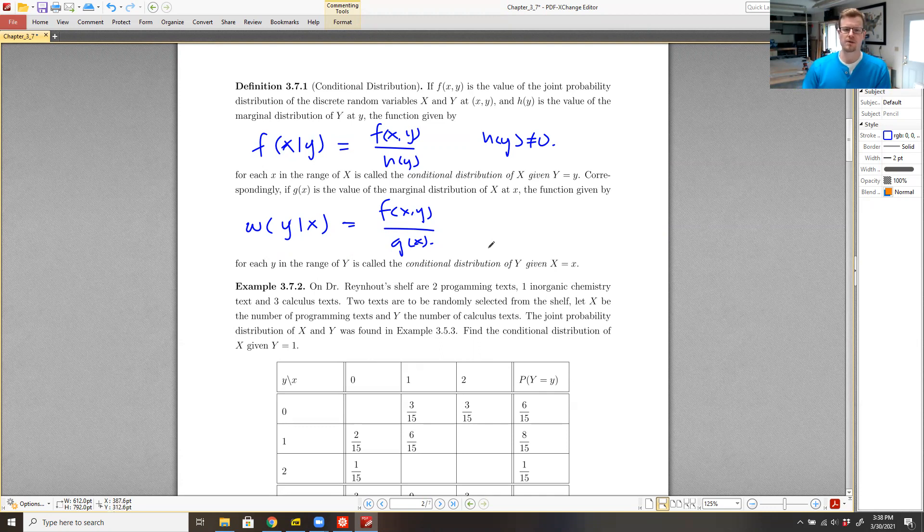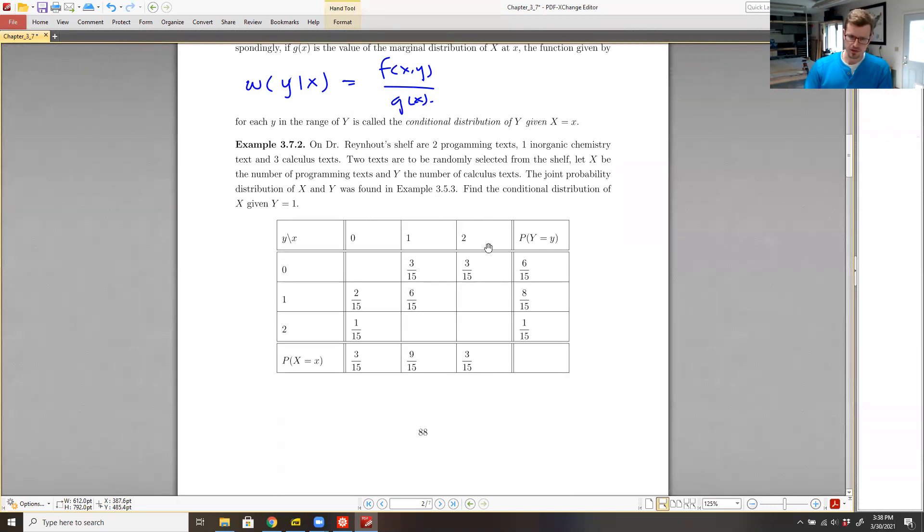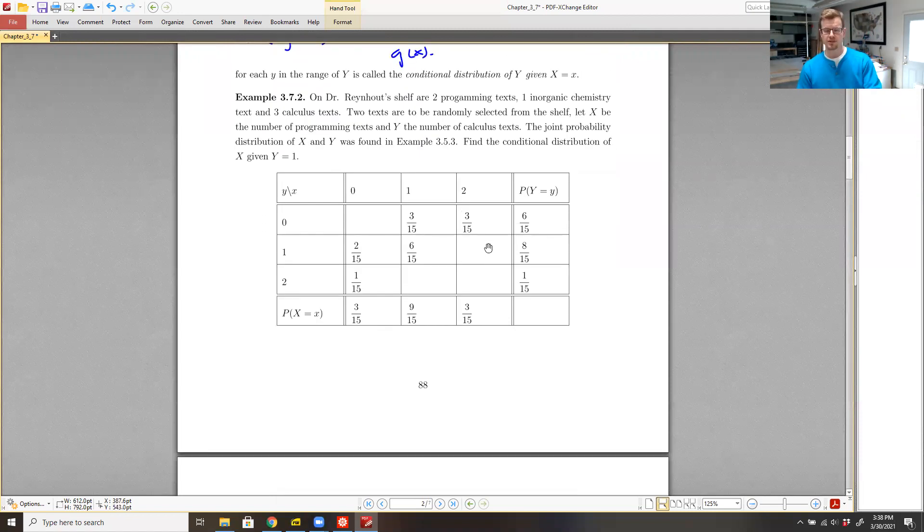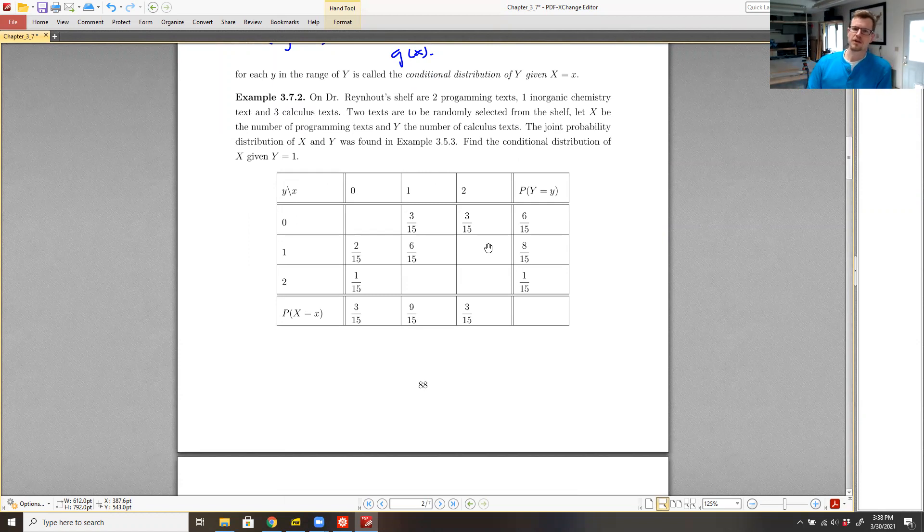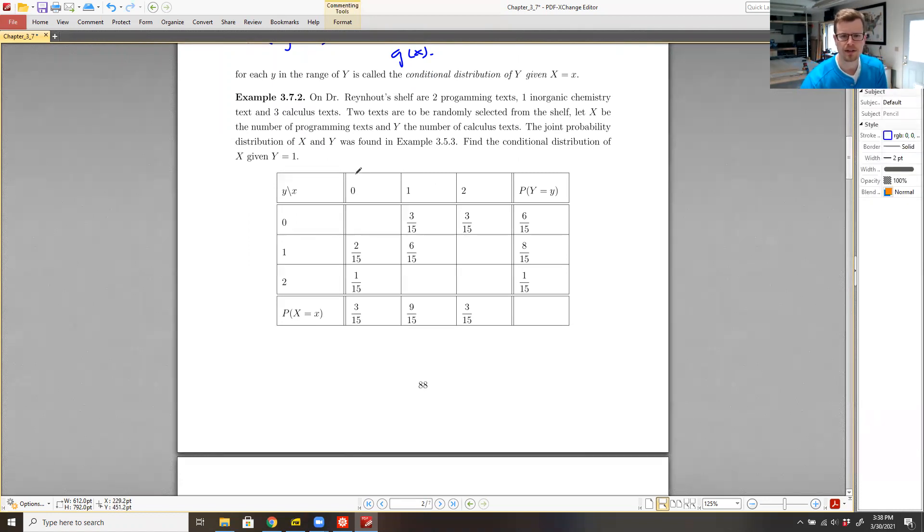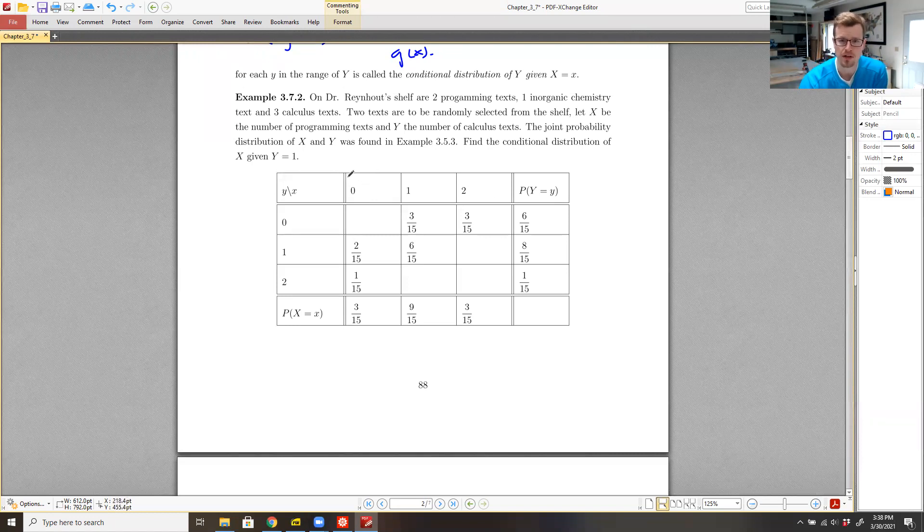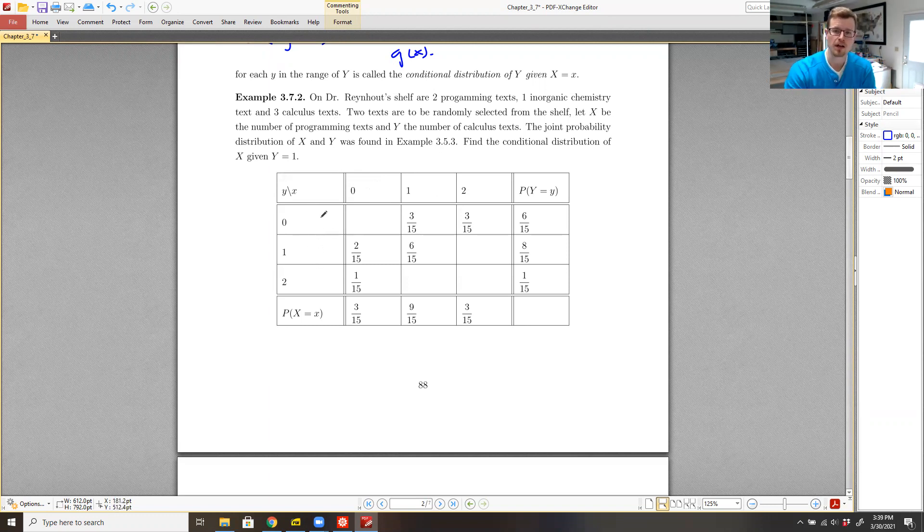So let's take a look at our example for the discrete random variables first. So this is the same example, again, that we've been looking at over the past couple of sections. So on my shelf are two programming texts, one inorganic chemistry text, and three calculus texts.